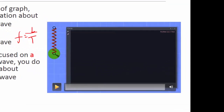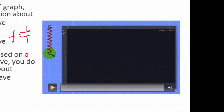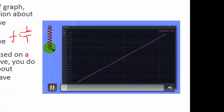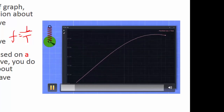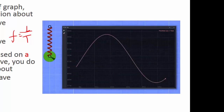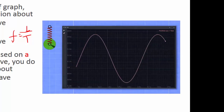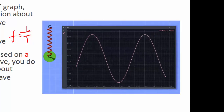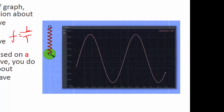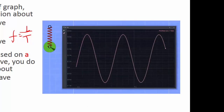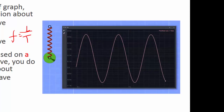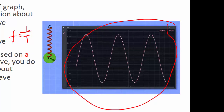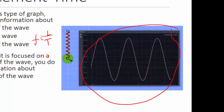So the displacement-time graph will look something like this. Notice how this green dot actually moves — it goes up and down, up and down. You are only focused on a single particle and how it actually moves. This graph describes the displacement-time graph of this green circle.